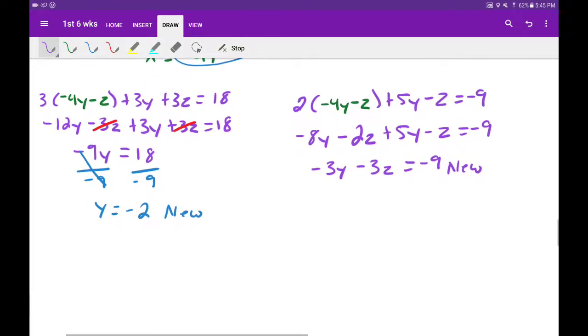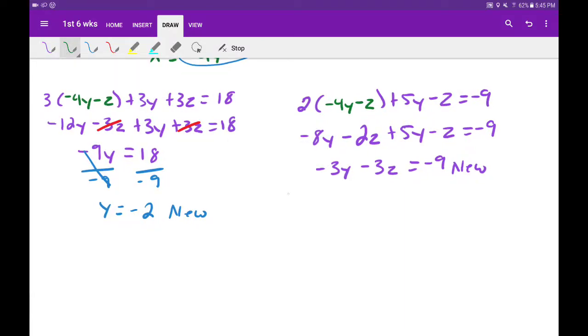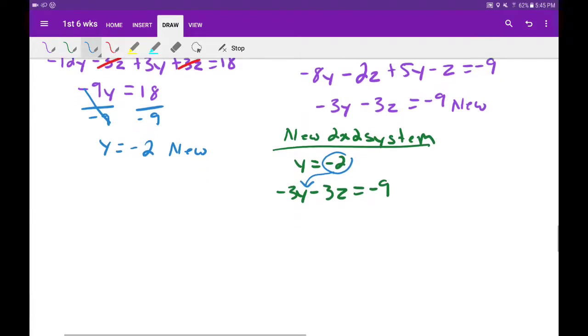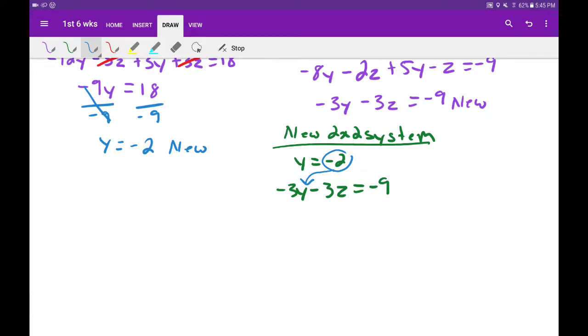Combining our two new equations together gives us our new 2 by 2 system. We got y equals negative 2 and negative 3y minus 3z equals negative 9. This is a pretty easy system to solve because I'm going to take this negative 2 here and plug it right into that y. So we get negative 3 times negative 2 minus 3z equals negative 9.